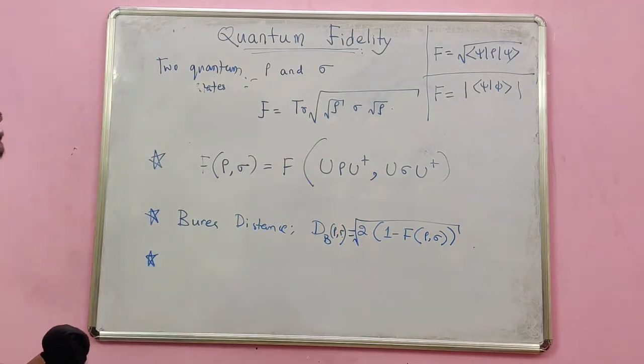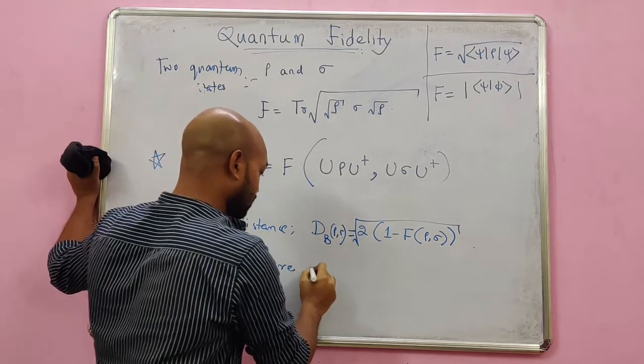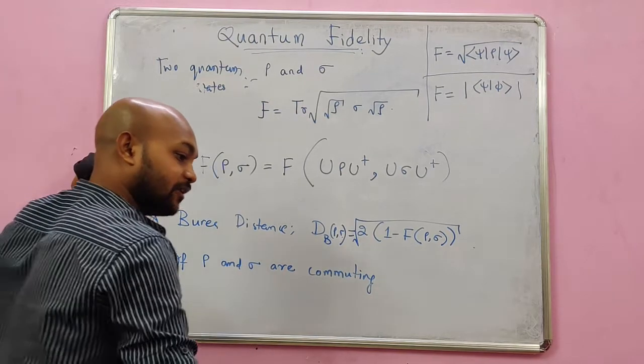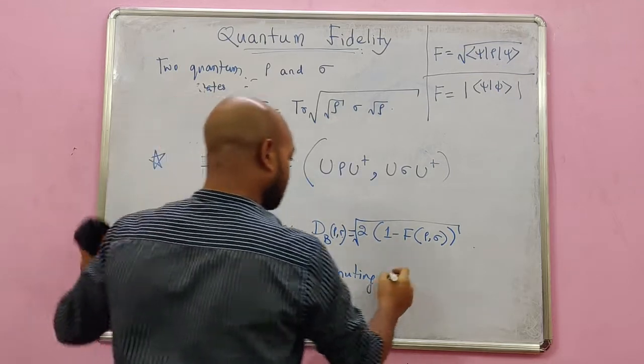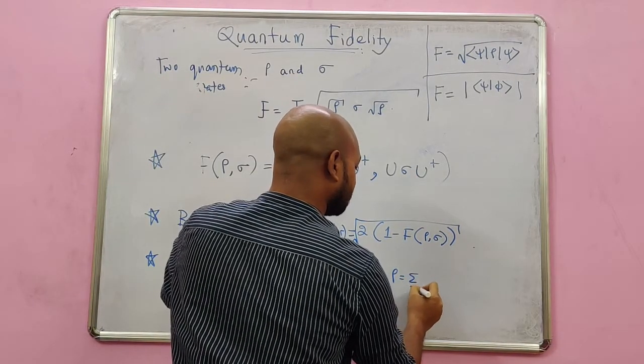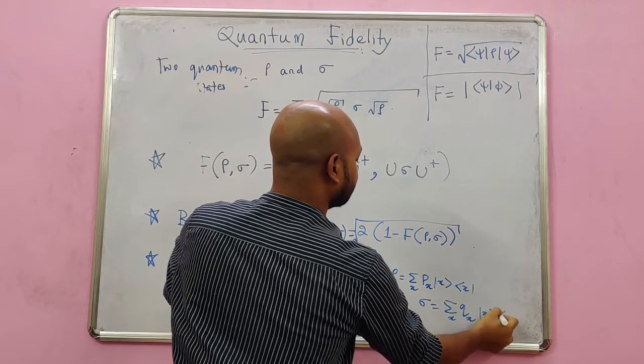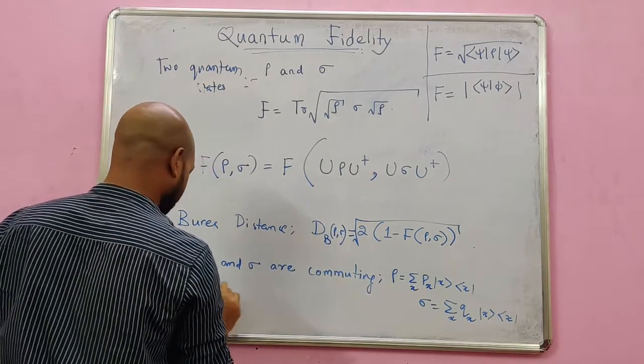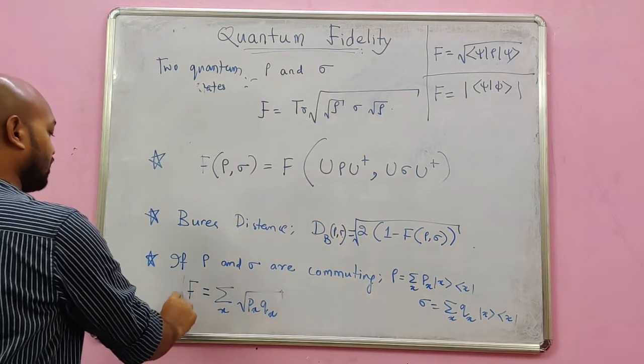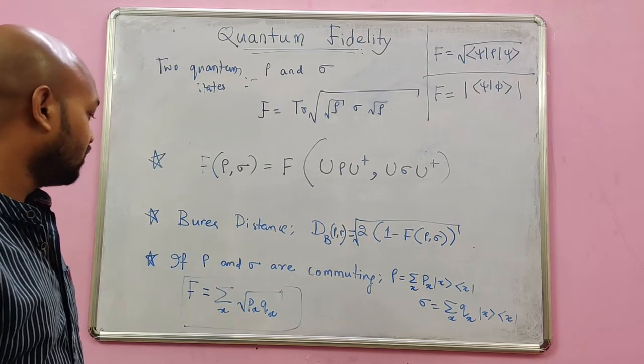If ρ and σ are commuting, then the fidelity looks further simpler. But before that, if they commute, then they are diagonalizable in the same basis. So I represent ρ as something like Σ_x p_x |x⟩⟨x| as per the spectral decomposition theorem, and σ as Σ_x q_x |x⟩⟨x|. And then the fidelity is very simply given by Σ_x √(p_x q_x). And we saw something like this in case of our trace distance as well, and we proved that exclusively.